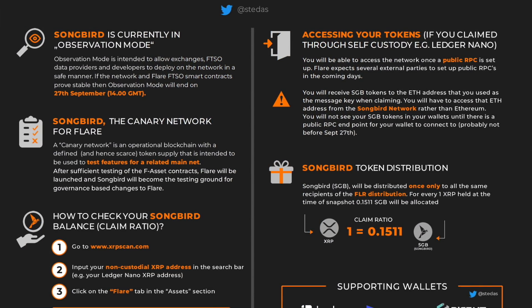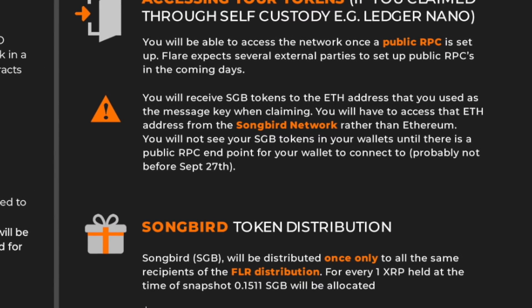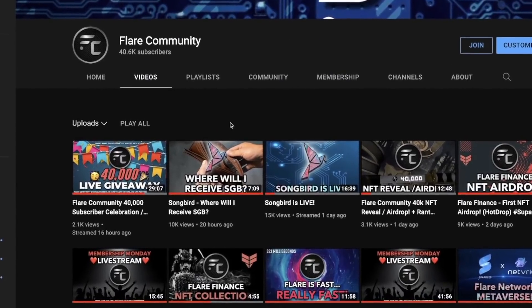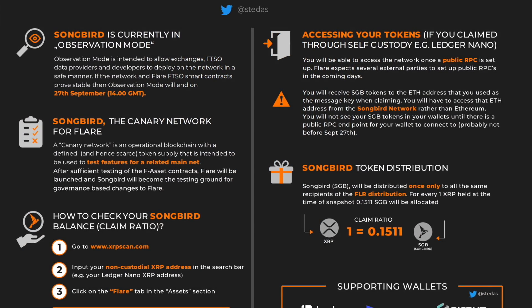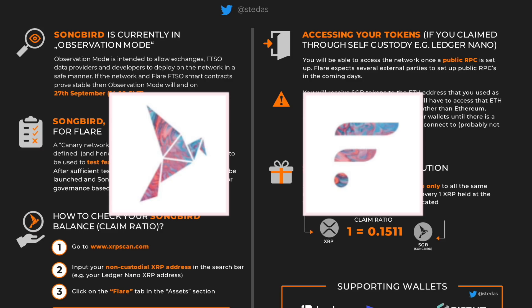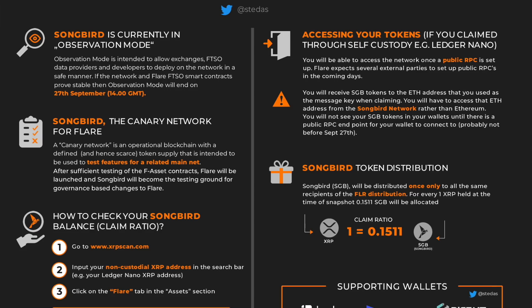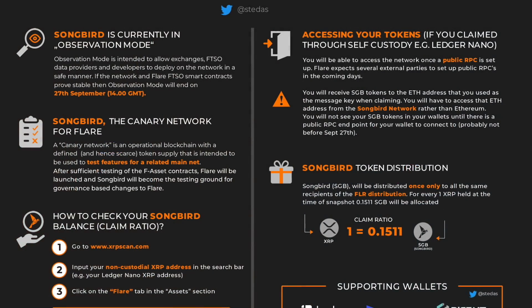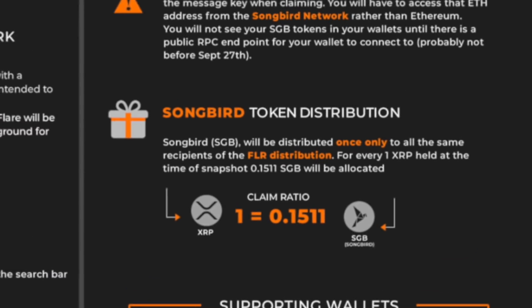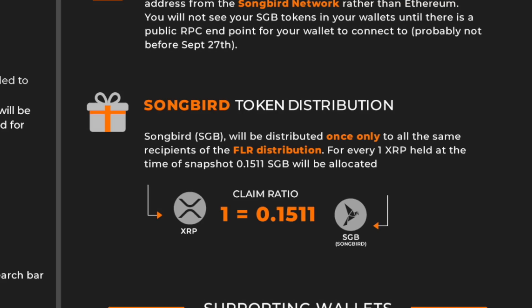Flare expects several external parties to set up public RPCs in the coming days. You will receive Songbird tokens to the Ethereum address that you used as a message key. Your Songbird and Spark tokens are going to exist on the Songbird and Flare networks respectively — they won't land in your Ethereum address or your XRP address, because they are separate networks. Just like you can't put Bitcoin onto Ethereum, you can't put Spark onto Ethereum or Songbird onto Ethereum.